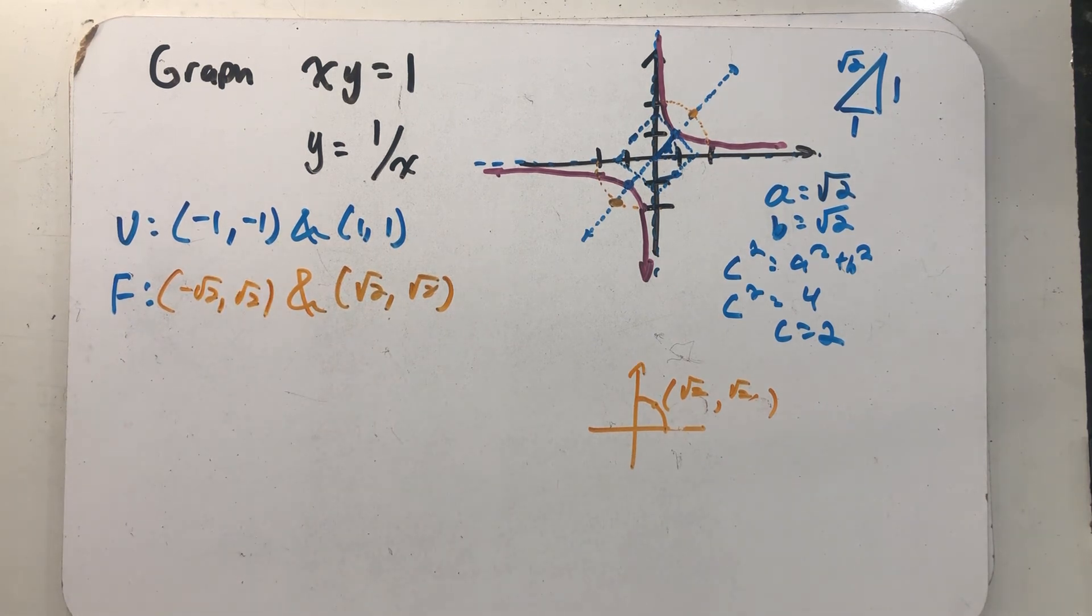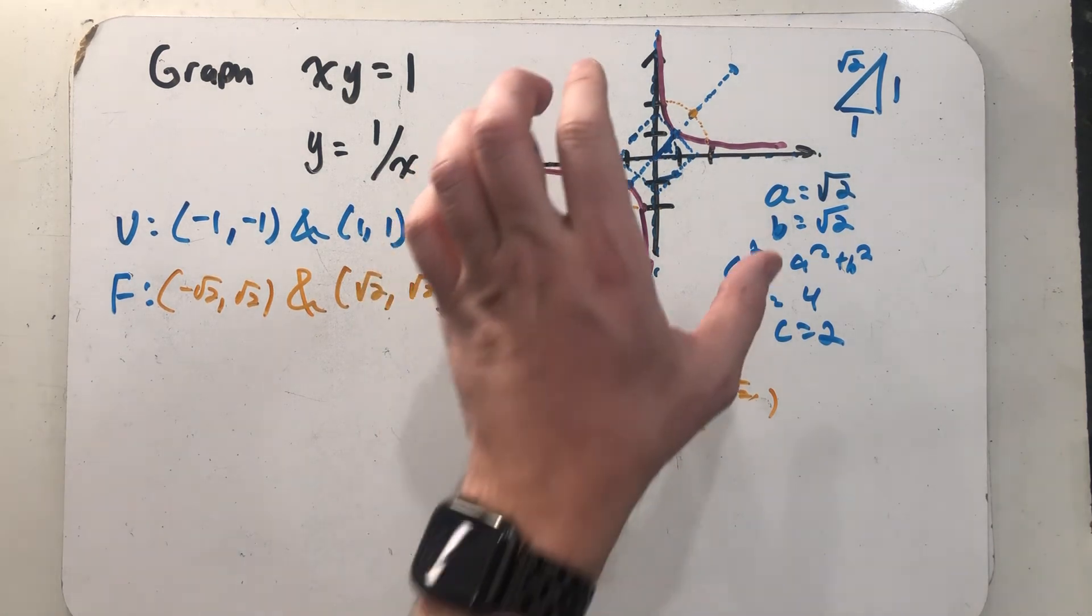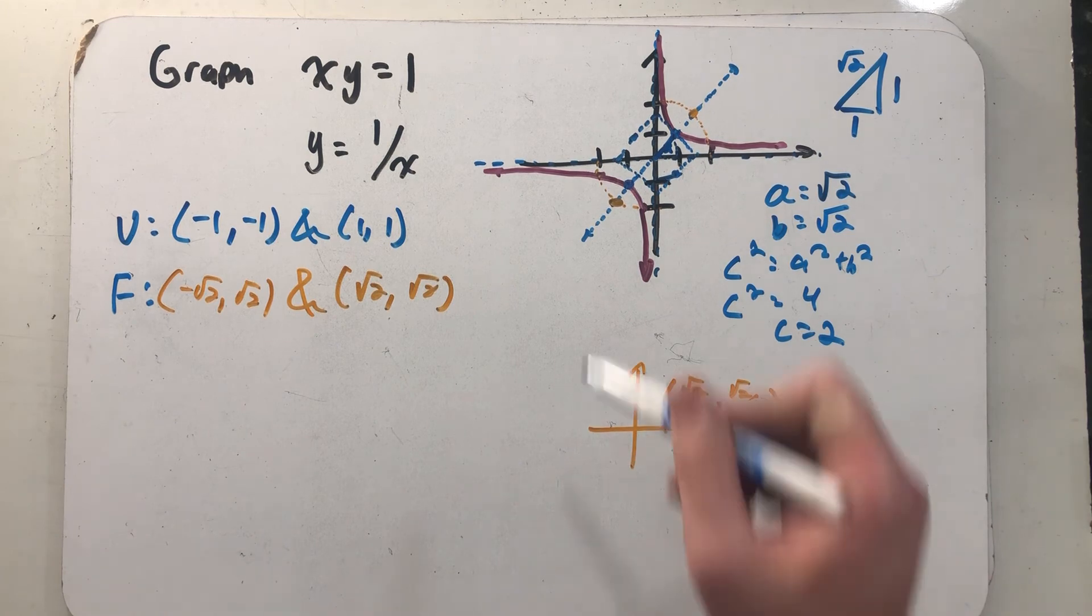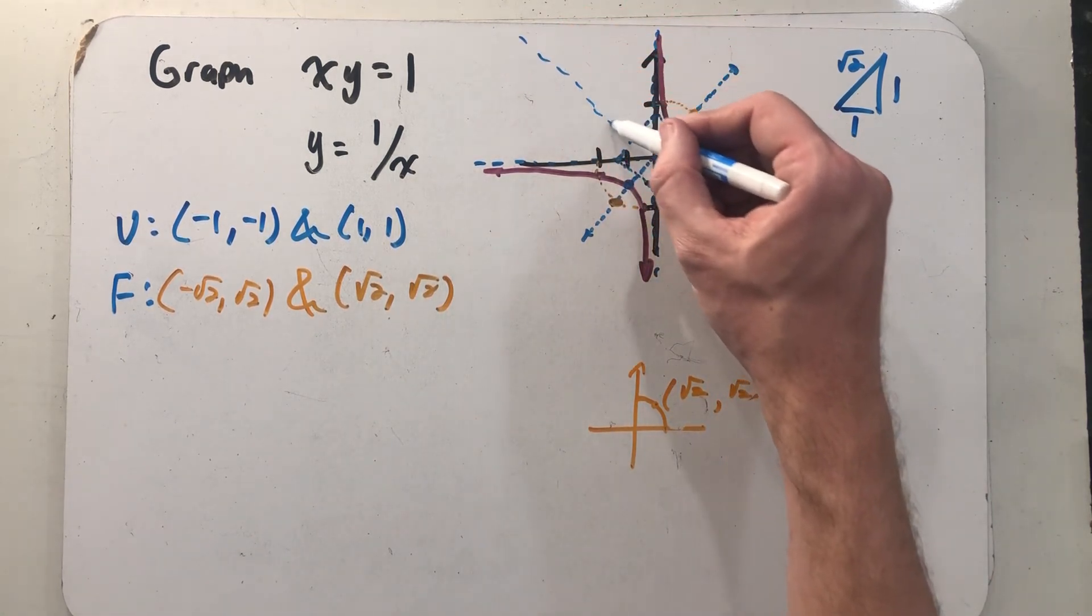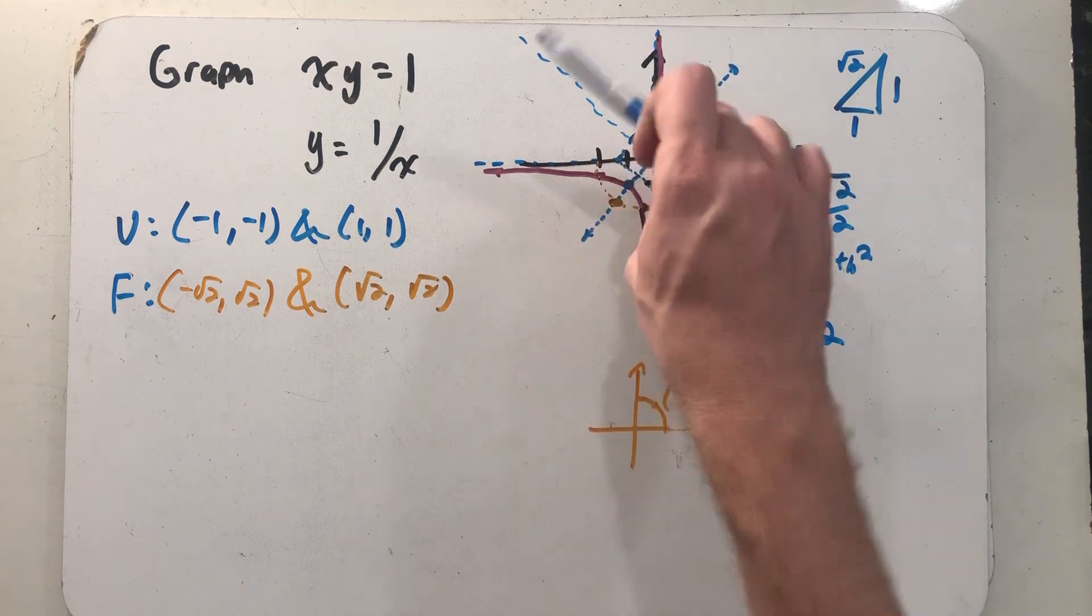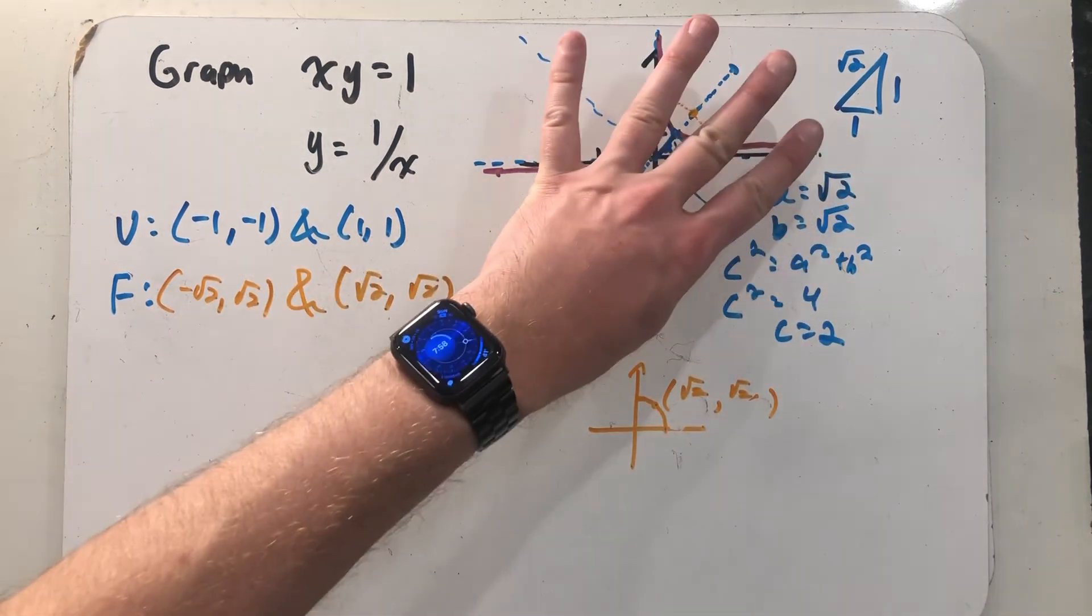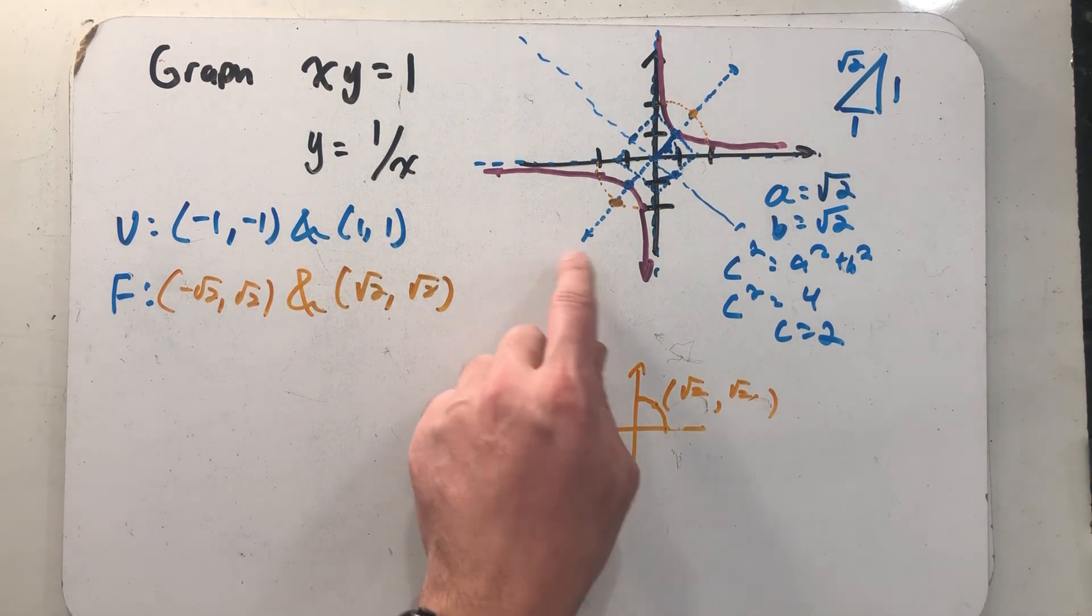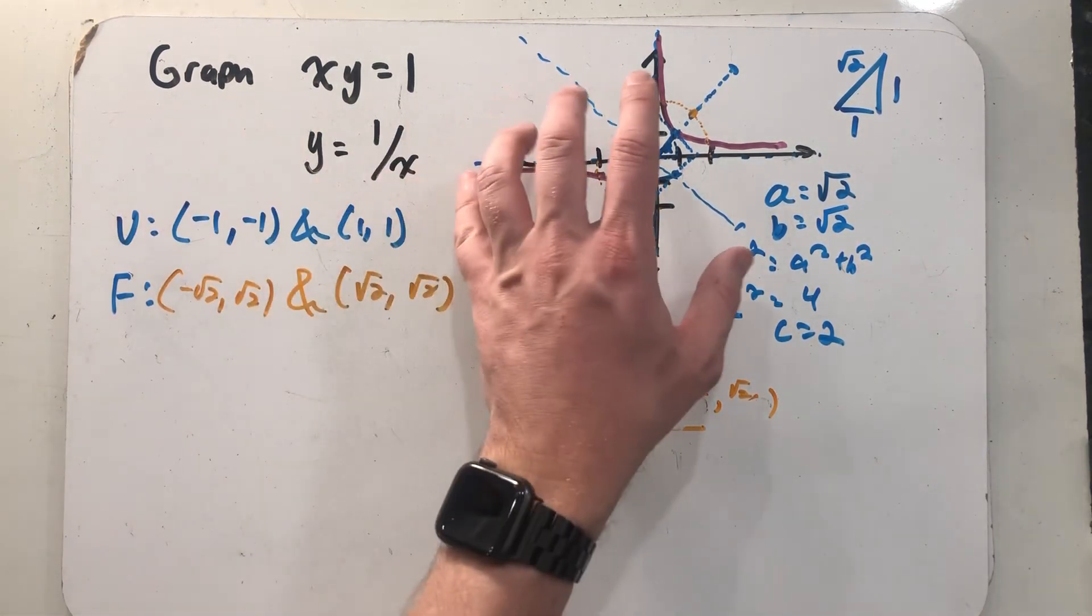And we found our vertices, foci, center; we could even calculate an eccentricity. But this was really a hyperbola the whole time. It just has a transverse axis and a conjugate axis that have been turned by 45 degrees. So sometimes when we see a rational function that can be thought of as a transformation of this graph, it's also a hyperbola that's just been turned a little bit.